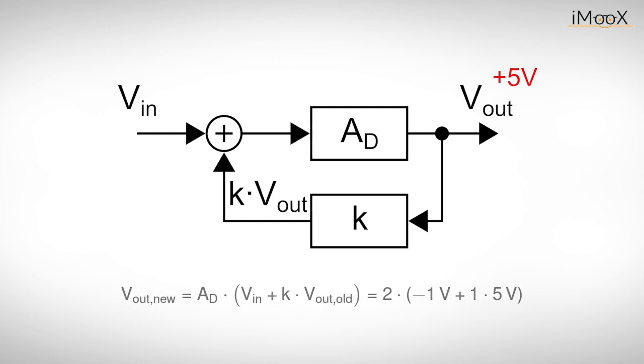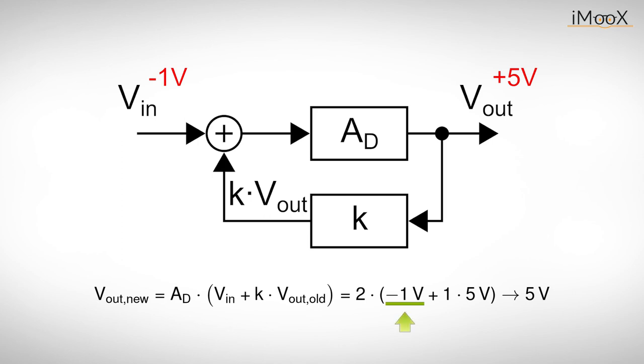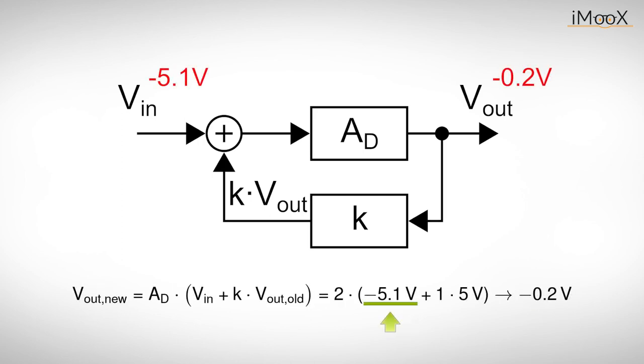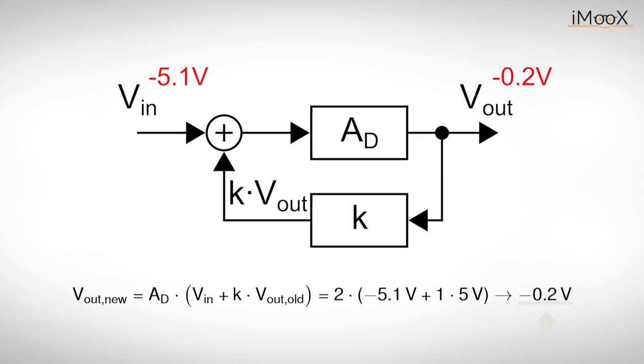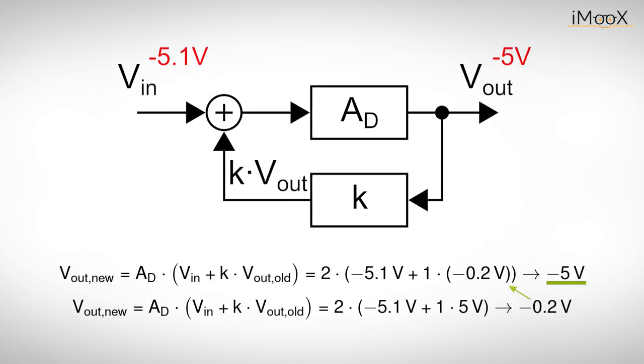Let us apply a negative input voltage of minus 1 volt and recalculate our output voltage to see what happens. As we can see, an input voltage of minus 1 volt is not enough to change the output voltage. Now we apply a negative input voltage of minus 5.1 volts and recalculate our output voltage again. In the first instance we get minus 0.2 volts, which gives in the next instance minus 5 volts. We just managed to switch the output voltage by applying an appropriate input voltage.